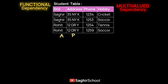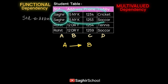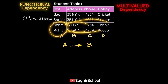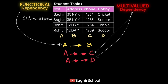Labeling attributes A, B, C, and D: functional dependency is shown with a single arrow — A is functionally dependent on B, like a student having one address. Multi-valued attributes are shown with double arrows — C is multi-valued from A, and D is multi-valued from A. A student named Sagir has two phone numbers and two hobbies; Rohit also has two phone numbers and two hobbies. Double arrows signify multi-value; single arrows signify functional dependency.